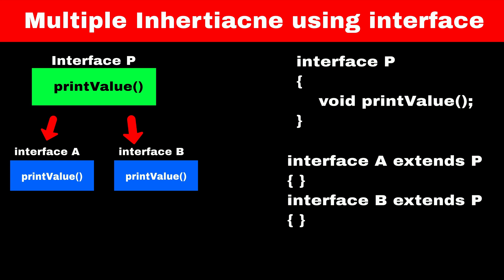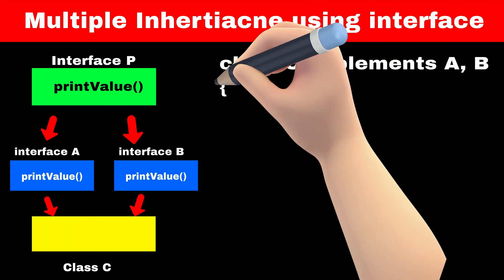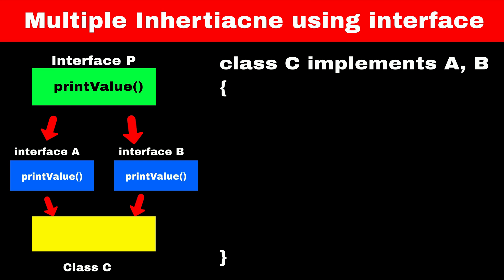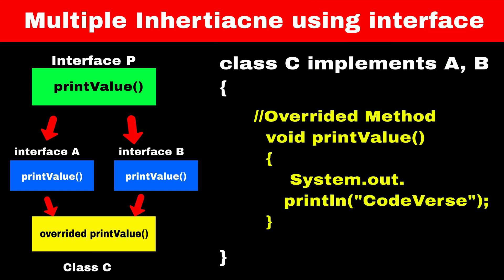Now consider a class C which will inherit the parent interfaces A and B. Since C is a class and a class cannot have abstract methods, we have to override the print value method. If we don't override this method, Java will give a compile-time error. So when we try to access the print value method in class C, Java will access this overridden method, and the compiler won't get confused about which method to call.